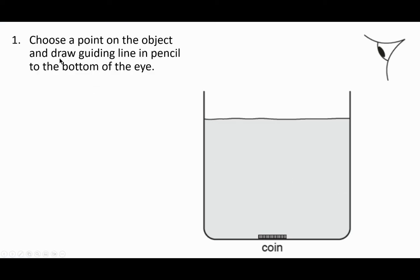The first step is choosing a point on the coin and drawing a guiding line. I've drawn a guiding line so I know my lines can go to the left of this to reach the eye. That's the first thing I do—draw a line until it hits the surface.